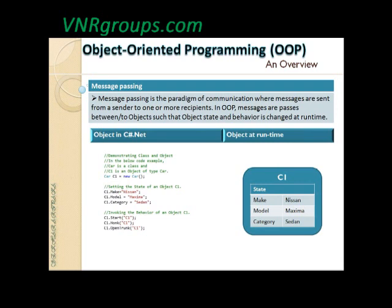In this example, message passing means passing values to define the state and also invoking methods to alter the state. The real-time object is going to reflect the state that has been modified by your code.